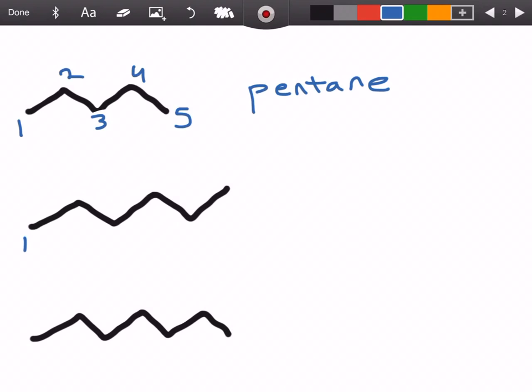Next up, we have one, two, three, four, five, and six. And when we have six carbons total, we know we have hexane.